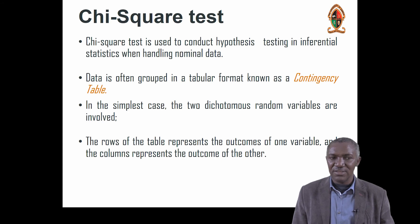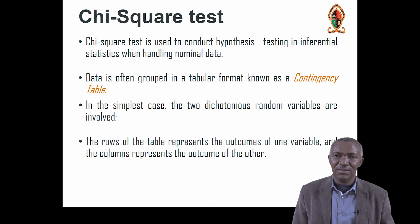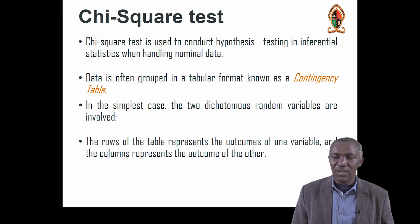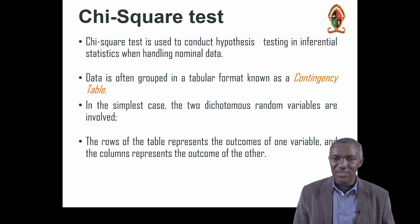We talk about the variance, the range, and standard deviation — that's about variability. But now we're talking about inferential statistics, where we want to make conclusions and explain why things are set in a way. Chi-square is one such tool used in inferential statistics.